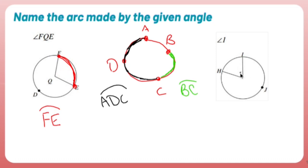Similarly, angle 1 is between I and H, and I don't care about J. So I can either call this IH, or I can call this HI. Either way, I'm not going to include the J.